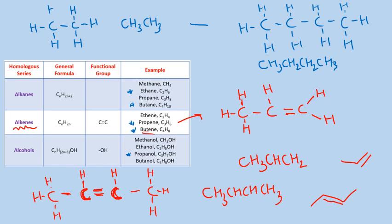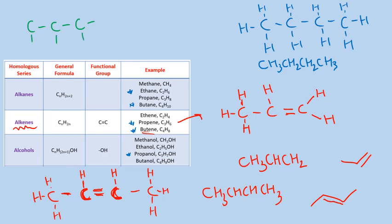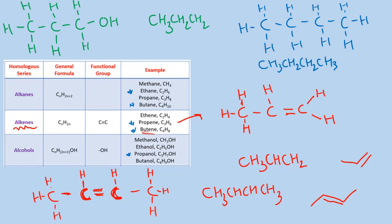Finally, propanol: the displayed formula shows three carbons with all bonds drawn, with the OH group at the end — though I could also put it on the middle carbon. The structural formula is CH₃CH₂CH₂OH. The skeletal formula shows two lines representing three carbons with an OH group at the end. Where exactly the OH group is positioned can be specified by naming, which we'll cover in the alcohols topic.